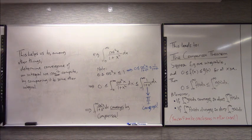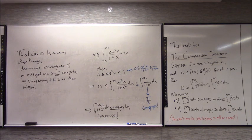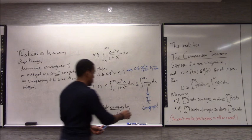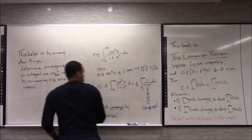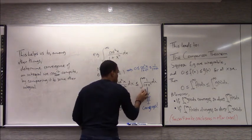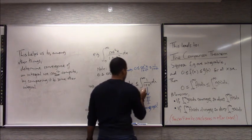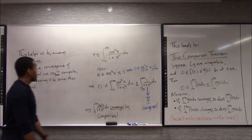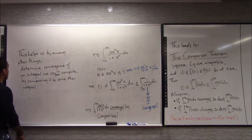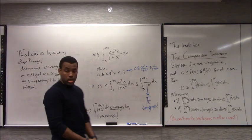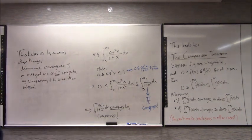So the integral from 0 to infinity of cos²(x)/(1+x²) dx converges by comparison. I don't know what it converges to, but I know it converges, and I can give you an upper bound: whatever the answer is, it's less than or equal to π/2. Sometimes knowing that an integral has a finite answer is more important than knowing exactly what that answer is. The comparison theorem helps us out when one integral is really hard to compute — you use an easier integral to make a conclusion.